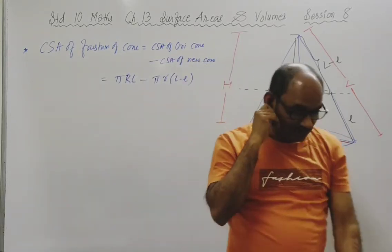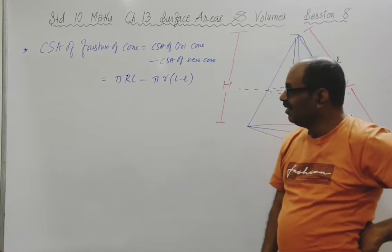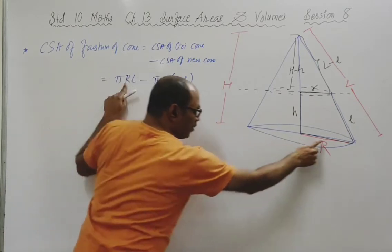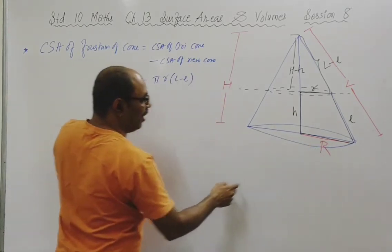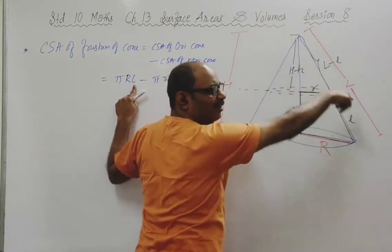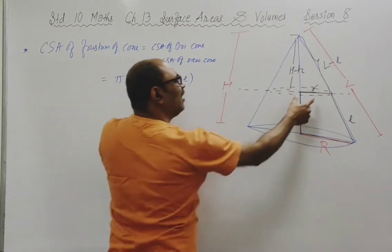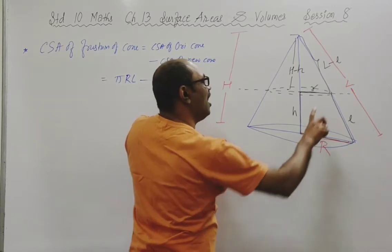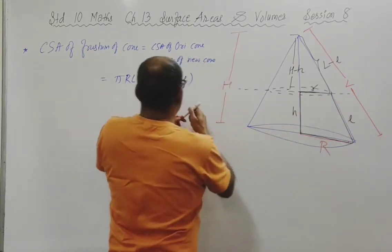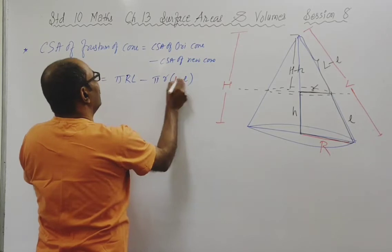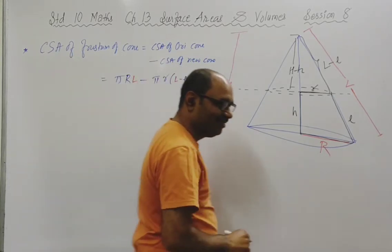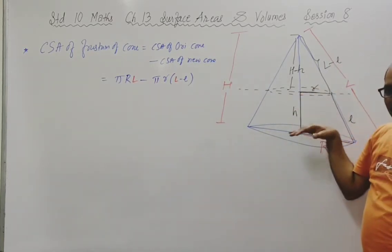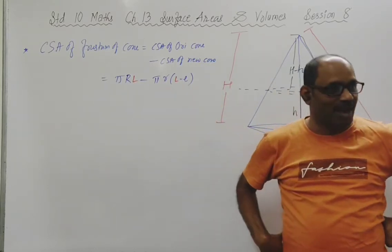Now when talking about the frustum of cone, capital R and small r are connected to it, and small l is connected to it. But capital L is not connected to the frustum of cone - it is an unwanted variable. So I will have to substitute capital L and get its value from elsewhere.